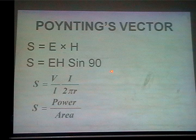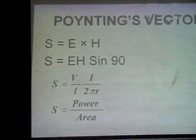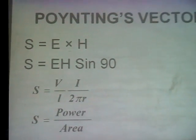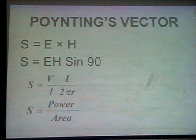Power by area — the Poynting vector gives power density. In a transmission line, electric field and magnetic field are perpendicular. When E and H are perpendicular, energy flows in a direction perpendicular to both E and H. S = E × H, where â (a unit vector perpendicular to E and H) gives the direction. If the magnetic field is in one direction and the electric field in another, then the energy will flow perpendicular to both.